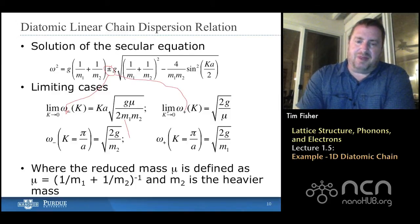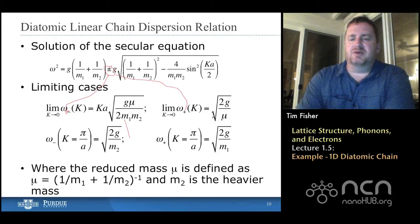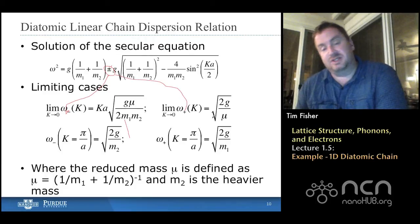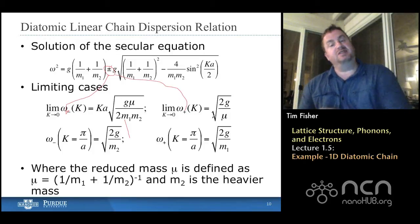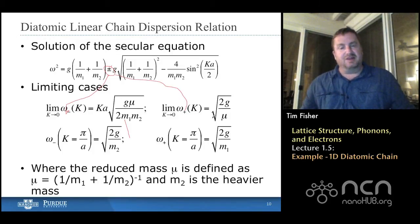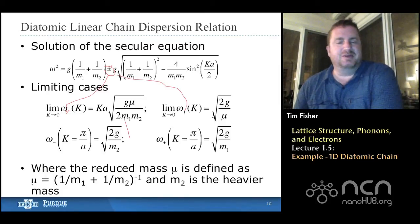But, most importantly, as k goes to zero for this positive branch, we find that the frequency does not go to zero. It's not proportional to k anymore. We have a finite frequency at zero wave vector, which means that when we have an infinite wavelength, we have still a finite frequency. And that takes some thinking about and some reasoning to understand. And we'll go through that a little bit.